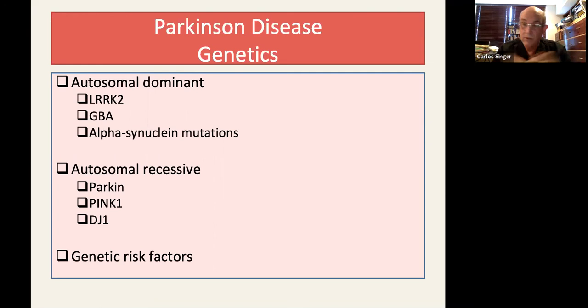Among the autosomal recessive, we have Parkin, which is in young onset Parkinson's disease. All of them, PINK1, DJ1, Parkin, you have to suspect them when you deal with a young person, autosomal recessive. That means you need two defective genes.